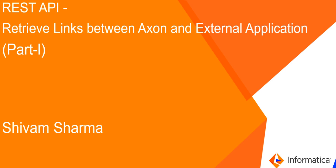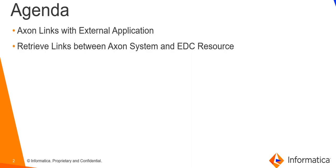Before proceeding further, let us take a look at the agenda of this video. Firstly, we will discuss which external applications can be linked to Axon, and then we will see what are the links between Axon and these external applications that can be fetched using REST API. Next, we will discuss how to retrieve the links between Axon system and EDC resource using REST API.